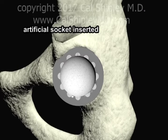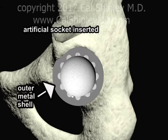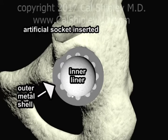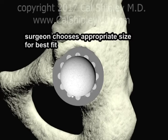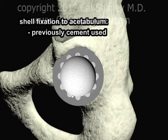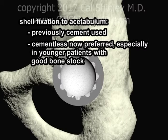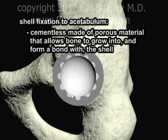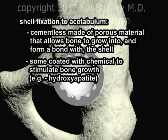The artificial socket is then inserted. Typically, the socket consists of two components: a hemispherical porous metal shell which lies in direct contact with the acetabular bone, and a polyethylene inner liner designed to articulate with a highly polished artificial femoral head. The artificial sockets come in a variety of sizes, and the surgeon will choose one that provides the best fit with the acetabulum. In recent years, a cementless form of outer shell has been utilized with better long-term fixation results, especially in younger patients with good bone stock. These cementless shells are made of a porous material which allows the patient's bone to grow into and form a bond with the shell. In addition, many cementless shells are coated with a chemical such as hydroxyapatite, which stimulates bone growth.